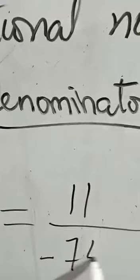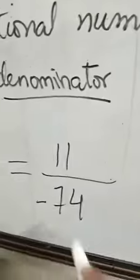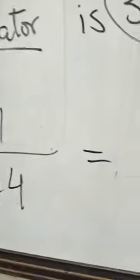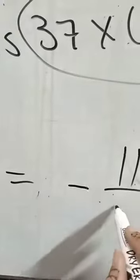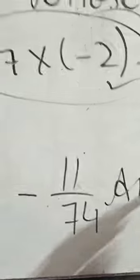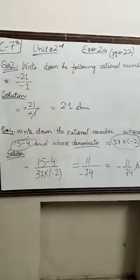So minus 74, okay. And now you have to write it in standard form. So if this minus sign is there, what do we do? We write the minus sign in the numerator and then we write it in the answer. This exercise is complete and you have to practice it. Okay, take care everyone. I love you.